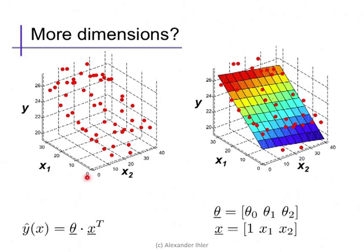Otherwise, everything about the procedure remains essentially the same. We have a parameter vector theta, a feature vector for each data point, and our predictor is the dot product between those vectors.